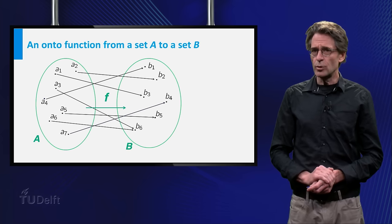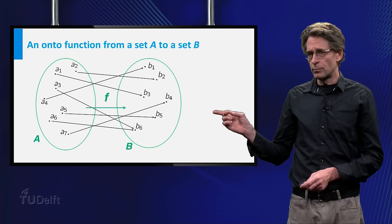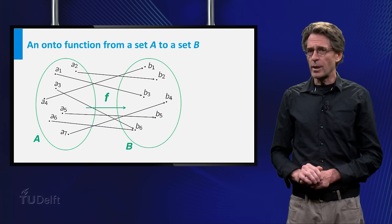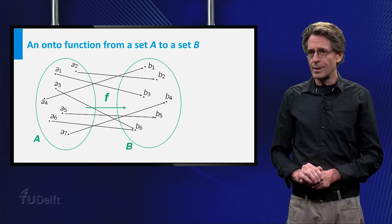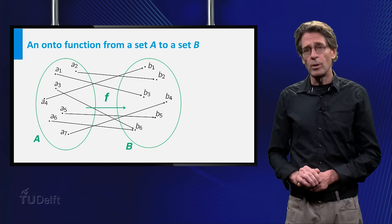The slide shows a typical onto function. For each b sub i in the codomain, capital B, there is at least one arrow pointing to it.